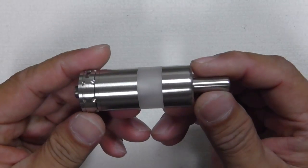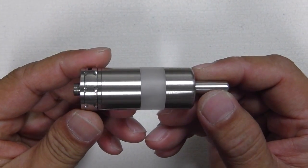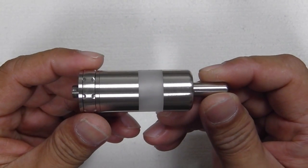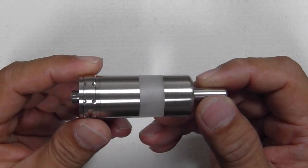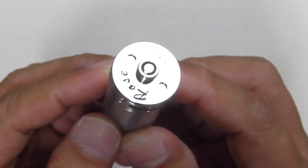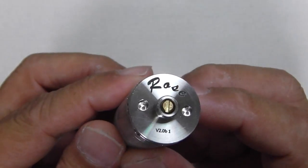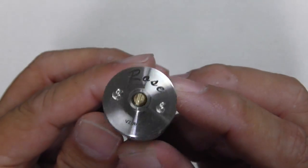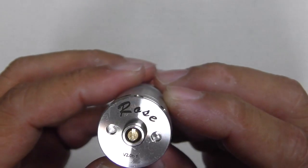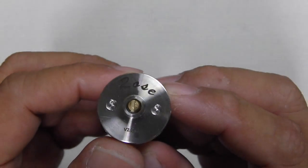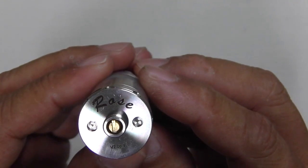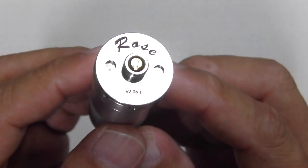We're going to put the box aside. This is how the V2 looks like. Like I mentioned, this could be a clone from Foxgar in China. Taking a closer look, the bottom section, we have the Rose laser engraved onto it. If I'm not mistaken, is that a serial number? No, it says V2B1, that's what it says here.